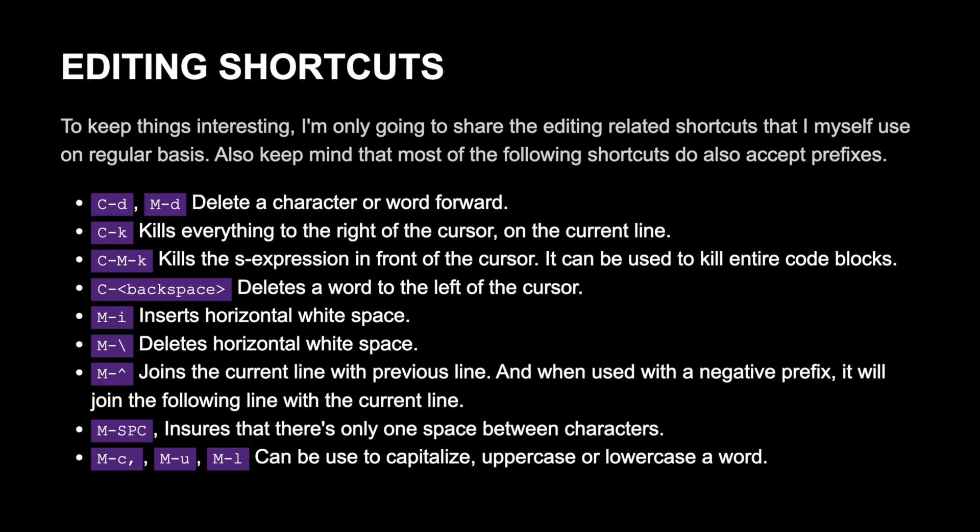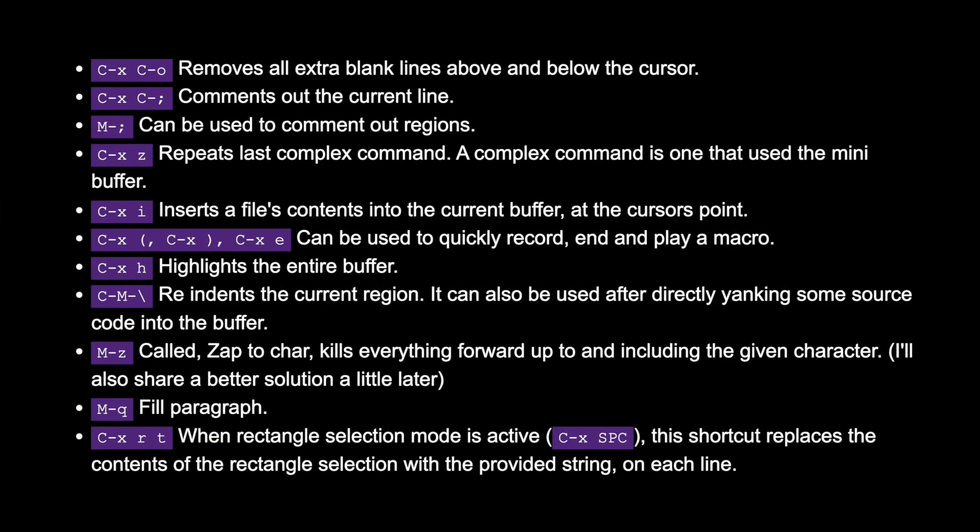Meta+I inserts horizontal white space. Meta+\ deletes horizontal white space. Meta+^ joins the current line with the previous line, and when used with a negation prefix it will join the following line with the current line. Meta+Space ensures there's only one space between characters. Meta+C, Meta+U, and Meta+L can be used to capitalize, uppercase, or lowercase a word. Ctrl+X Ctrl+O removes all extra blank lines above and below the cursor. Ctrl+X Ctrl+; comments out the current line. Meta+; can be used to comment out regions.